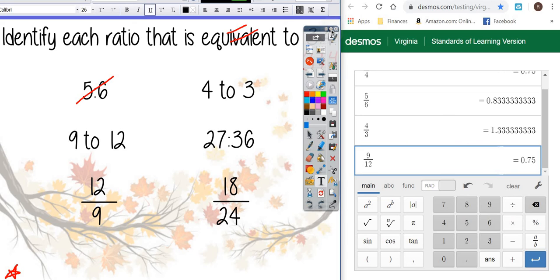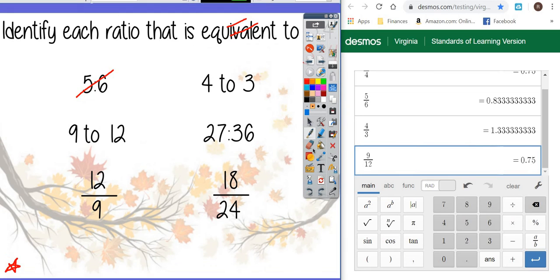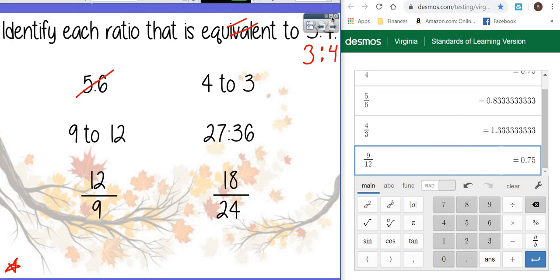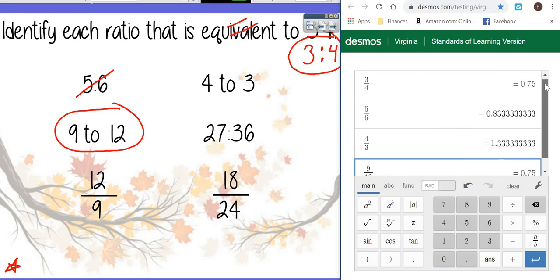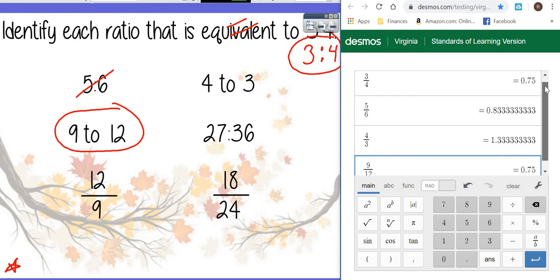That I got when I took three divided by four. So this is equivalent to this because point seven five is exactly the same as the point seven five I got when I divided three divided by four.